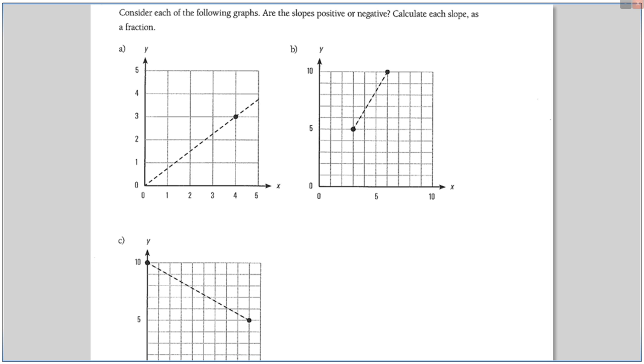Let me give you an example. A drainage pipe. Would that be positive or negative? Negative, because it has to drain using gravity, right? And then, what about, like, a conveyor belt going up? Yeah, it's positive. Consider each of the graphs. Are they positive or negative? Calculate each slope as a fraction. The first one, positive or negative? Positive, good. The second one? Positive. And the last one? Negative, good.